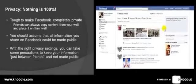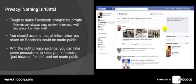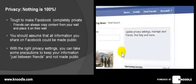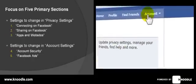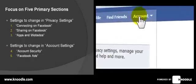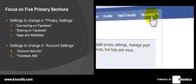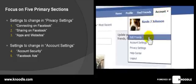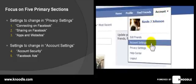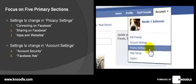In this presentation we're going to show you how to adjust the most important Facebook privacy settings. To access them, move over to the top right-hand corner of the screen and go up to the account tab and click on that. Then move down — there are two sections: account settings and privacy settings. These are the two areas where you can adjust various privacy settings within your Facebook account.